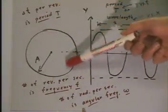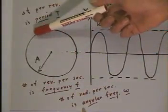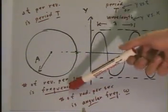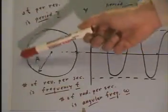If it takes us 3 seconds to get all the way around, then in 1 second we're going to only go 1 third of the way around. So our frequency is 1 third, or frequency is 1 third of a cycle per second.